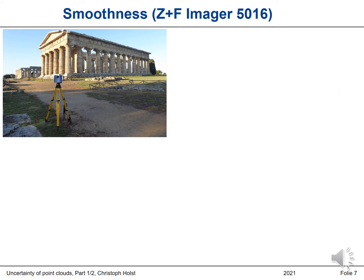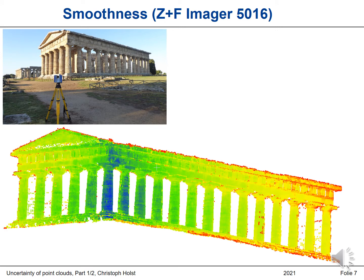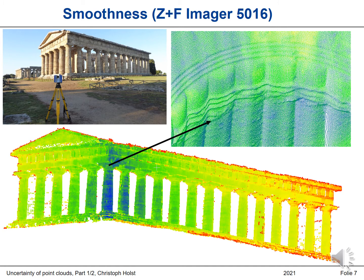Looking into the other high-end laser scanner — the Zoller+Fröhlich Imager 5016, which we took to Italy where we scanned some archaeological site — we can see the scan and, going into details, quite clearly see the curvature. We don't see any noise on the surface at all. We can see all the details of this archaeological site. Again, the smoothness gives us the impression that the point cloud is not uncertain at all, because we cannot see any errors.